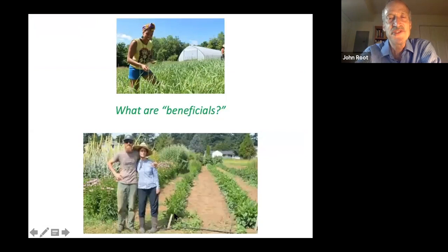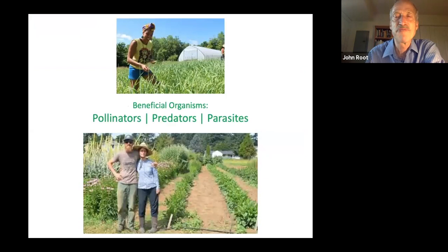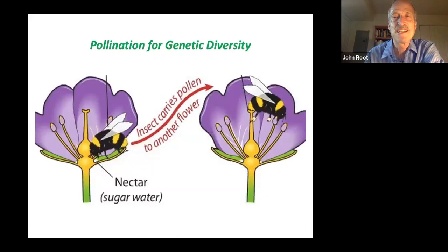So what are beneficials? The beneficials in the title refers to organisms that help farmers and gardeners grow the food and crops that we use. The three P's are the beneficial organisms: pollinators, predators, and parasites. They all do good things for gardeners and farmers.